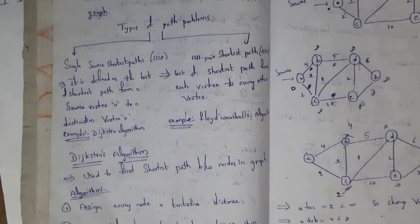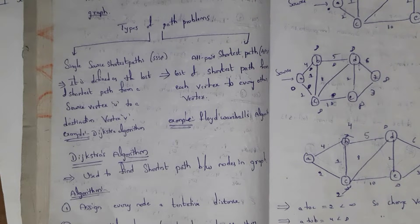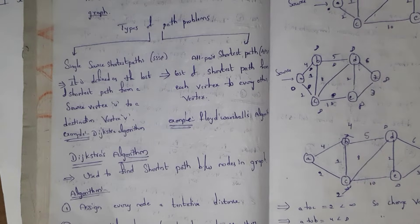Shortest path problems are classified into two types. One is single source shortest path problem, and the next one is all pair shortest path problem. An example of the single source shortest path problem is Dijkstra's algorithm, whereas an example of the all pair shortest path problem is Floyd-Warshall's algorithm.